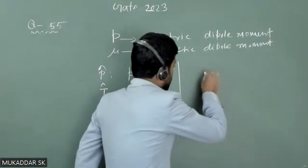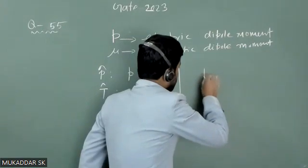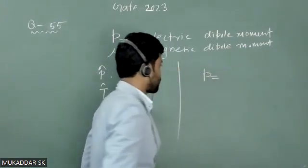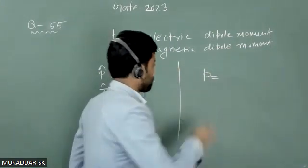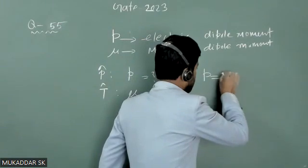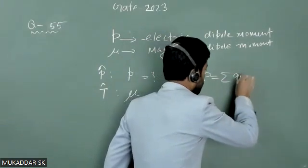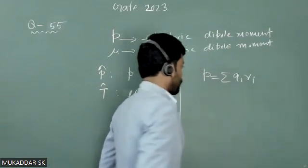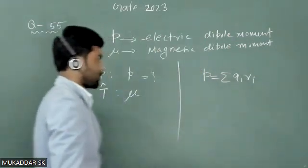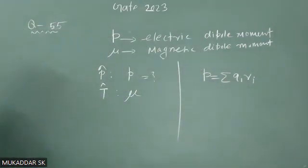The electric dipole moment, for a discrete charge distribution, can be expressed as a sum of Q_i R_i, where Q_i is the charge and R_i is the position vector of each charge.